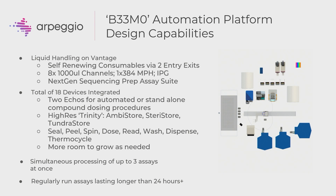Functions include seal, peel, spin, dose, read, wash, dispense, and thermocycle — with room to grow. One key capability is simultaneous processing of up to three assays at once: the same assay on different Echos, dosing and assaying at the same time, as well as auxiliary functions like sealing or treating plates simultaneously. One thing I'm proud of is we can run this thing for over 24 hours — we're getting to the point where we can run it for 30 to 36 hours regularly. It's pretty commonplace for people to kick off runs on Friday afternoon and come back Monday to just clean it up.